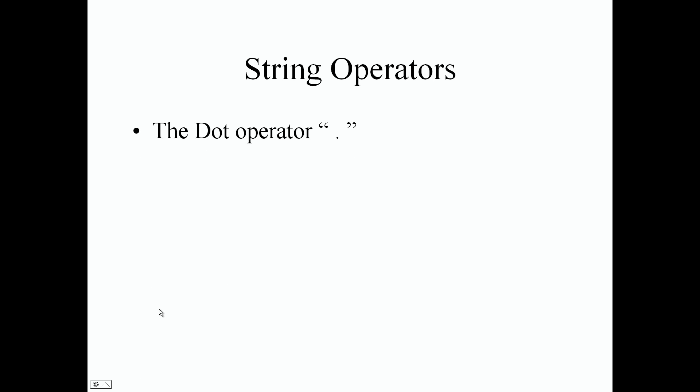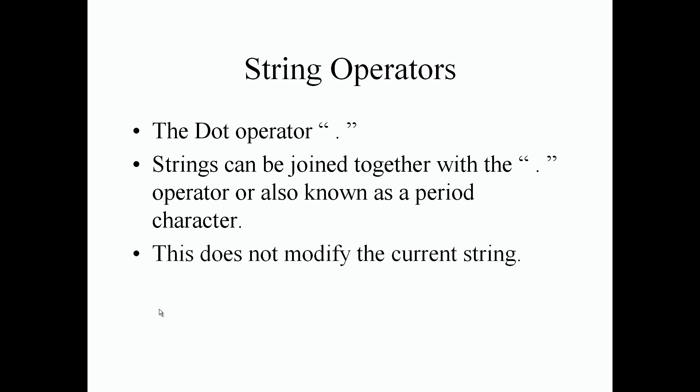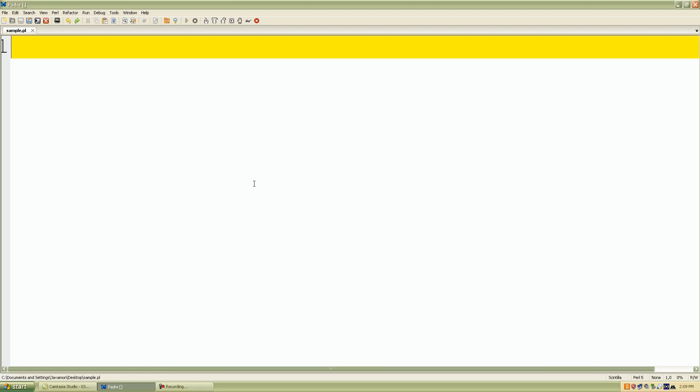Now let's talk about string operators — the dot operator, also known as the concatenation operator. We can actually combine strings. Strings can be joined together with the dot operator, also known as the period character. This does not modify the current string. Let's jump into examples.